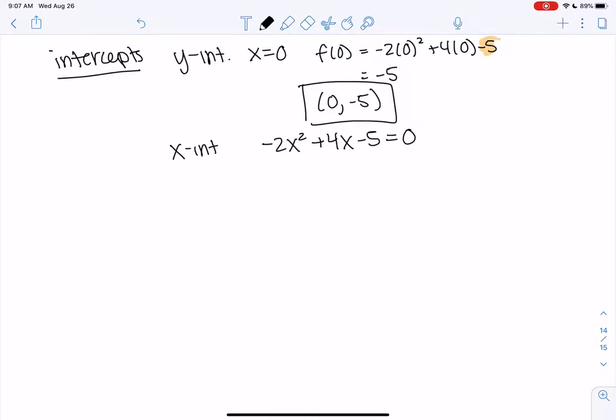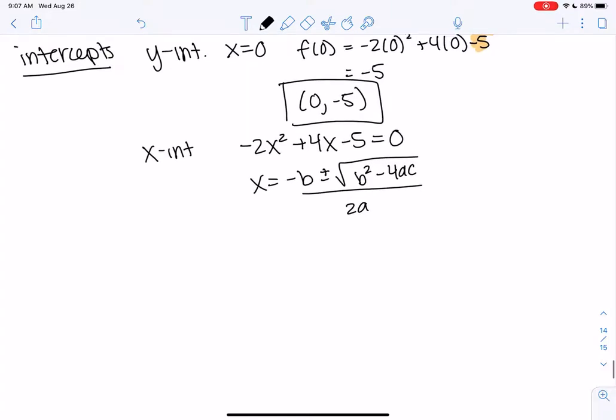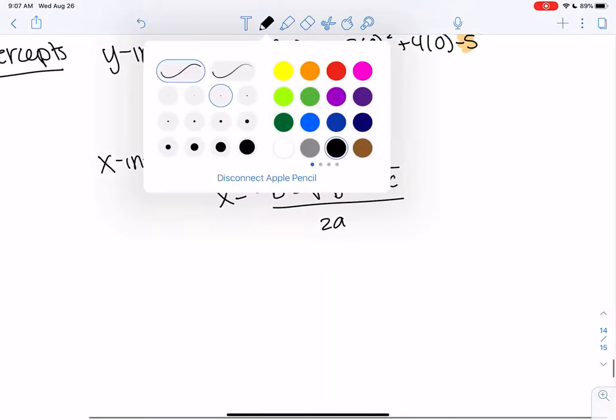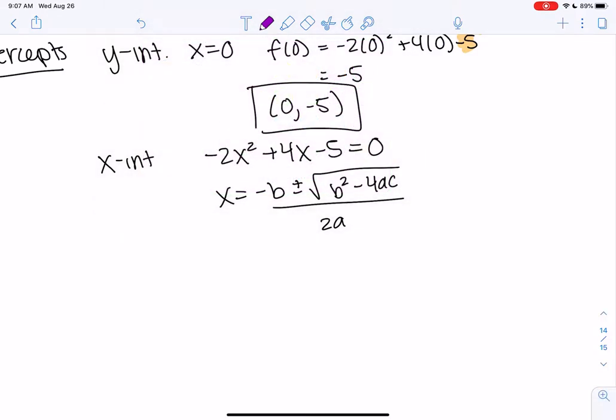But if it doesn't look like it's easy to factor, I just jump to the quadratic formula. So x equals negative b plus or minus b squared minus 4ac all over 2a. There's YouTube songs if you want to try to memorize this. They're really annoying, so you will memorize it.